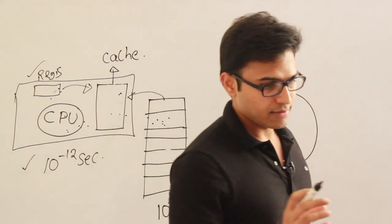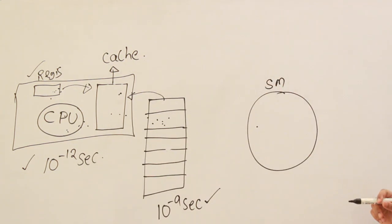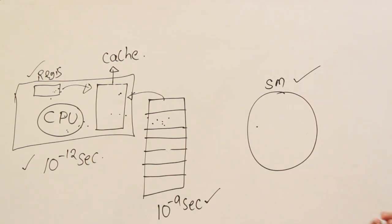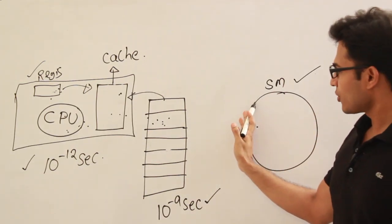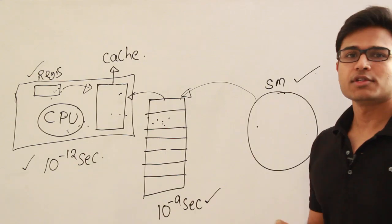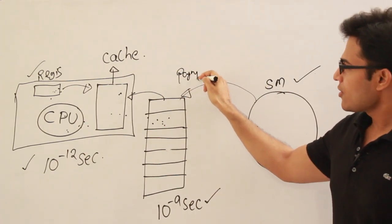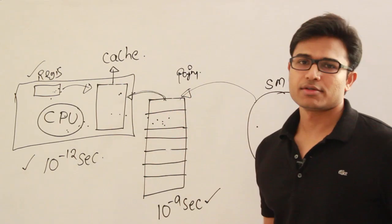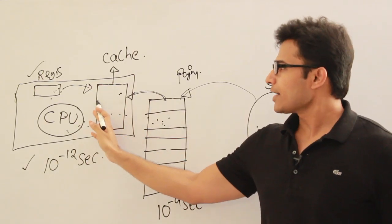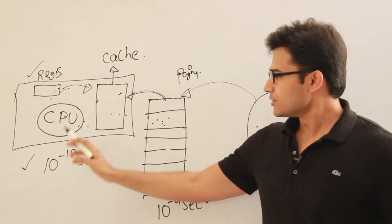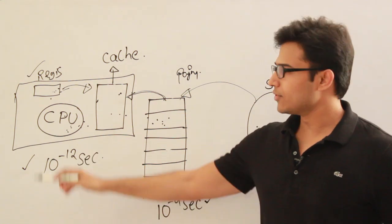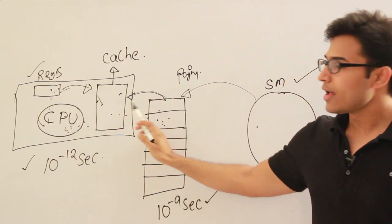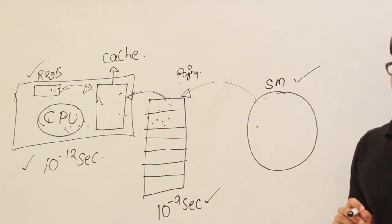To understand it another way: a process will be present in secondary memory — that is the virtual memory concept — and a part of that process will be present in main memory. Let's say we are using paging. A part of the page will be present in the cache, and a part of the cache will be present in registers. So if CPU wants anything, it will first look into registers; if not present, look into the cache; if not present, look into paging; and if not present, look into the secondary memory.